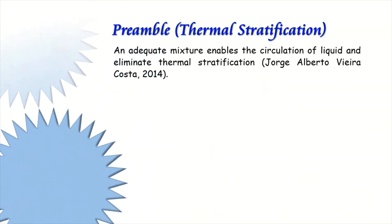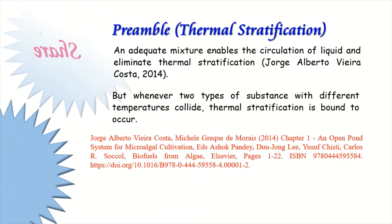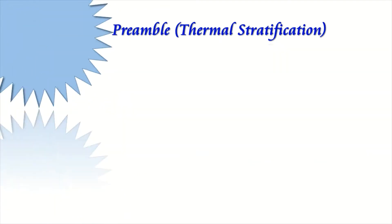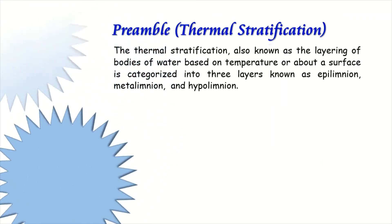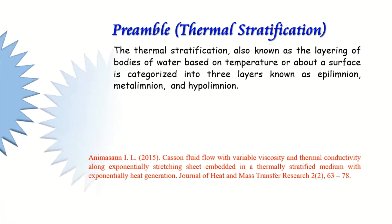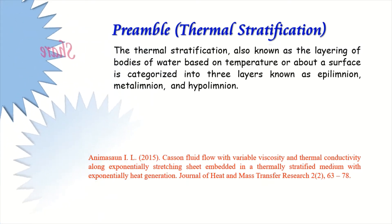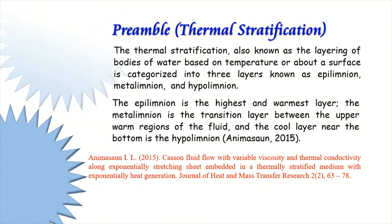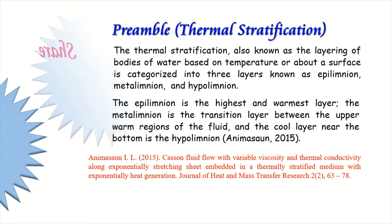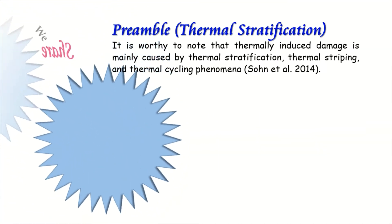An inadequate mixture enables the circulation of liquid and eliminates thermal stratification, but whenever two types of substance with different temperatures collide, thermal stratification is bound to occur. Thermal stratification, also known as the layering of bodies of water based on temperature, is categorized into three layers: epilimnion, metalimnion, and hypolimnion. The epilimnion is the highest and warmest layer, the metalimnion is the transition layer between the upper warm regions and the cool layer near the bottom.